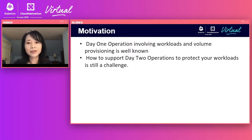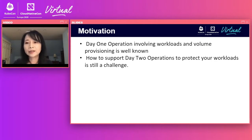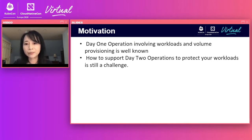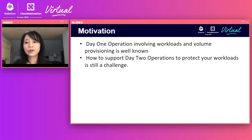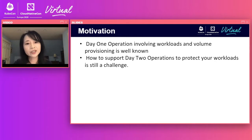In Kubernetes, stateful applications use persistent volumes to store their data. A persistent volume has an independent lifecycle from the pod that is consuming it, so that data can be preserved in the underlying storage system even if the pod goes away. What if the underlying storage system is stricken by a disaster? What if the volume on the storage system gets corrupted? When that happens, even data stored on persistent volumes will be gone.